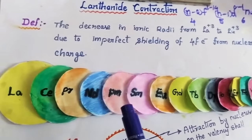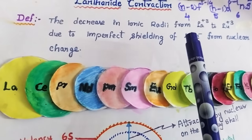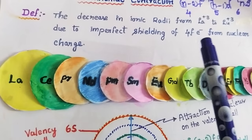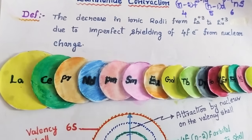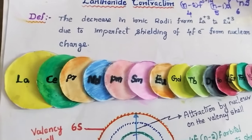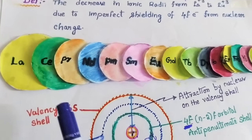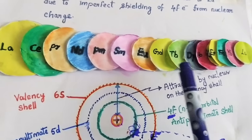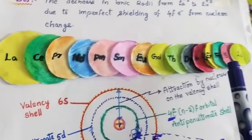The definition of lanthanide contraction is: the decrease in ionic radii from lanthanum to lutetium due to imperfect shielding of 4f electrons from nuclear charge is called lanthanide contraction. Another way to define it: the steady decrease in sizes of lanthanides with increasing atomic number is called lanthanide contraction.